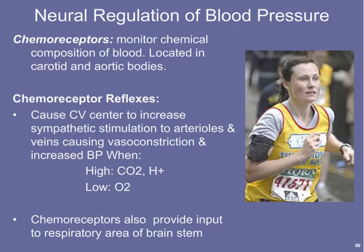Chemoreceptors monitor chemicals in the blood and are found in the carotid and aortic blood vessels. The chemicals monitored — such as CO2 and lactate — increase with higher metabolic demand. As CO2 or lactate increases, chemoreceptors send nerve impulses to the medulla oblongata, increasing both heart rate and blood pressure. Chemoreceptors also provide input to the respiratory areas of the brain, stimulating increased breathing rate and depth during high metabolic demand.